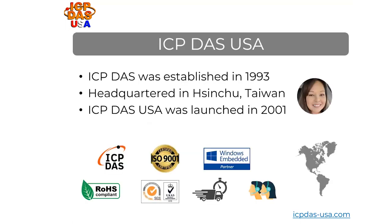We provide industrial control products and data acquisition system solutions that are low DC voltage and operate in extreme temperatures from negative 13 Fahrenheit to 167 degrees Fahrenheit, or negative 25 to 75 Celsius. ICP-DAS was established in 1993 and ICP-DAS USA was established in 2001 to support the North and South American markets.